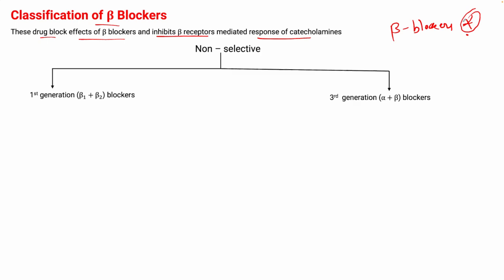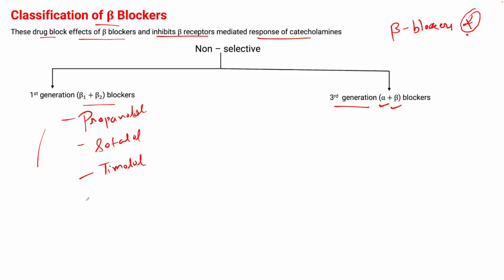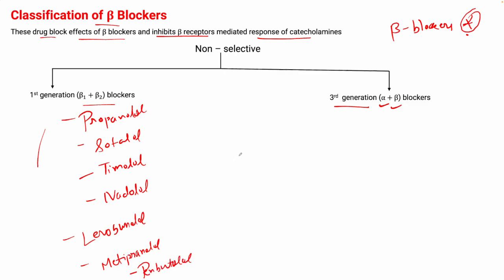Similar to the classification of alpha blockers — non-selective, selective, and non-selective with intrinsic activity — in beta blockers there is a first generation beta blocker and a third generation beta blocker. First generation beta blockers are beta-1 plus beta-2 blockers combined. Examples include propranolol, sotalol, timolol, nadolol, levobunolol, metipranolol, and penbutolol.